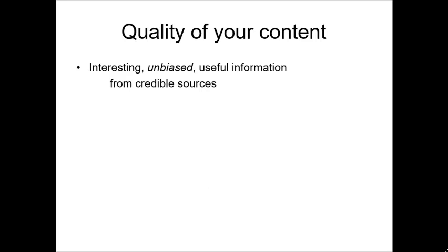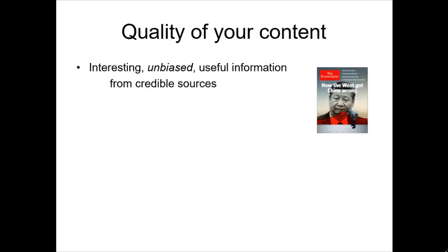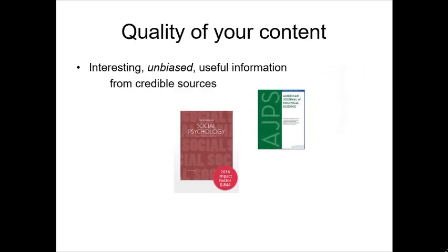Now let's talk about the most important part of your paper — the quality of your content. The purpose is to provide interesting, unbiased, useful information from credible sources. The credible sources could be legitimate news sources, of which there are many, and probably the most important part of your sources will be the peer-reviewed academic journals — there are thousands of those depending on what topic you're writing about. I've also posted another video on how to find these peer-reviewed journals on the library databases.